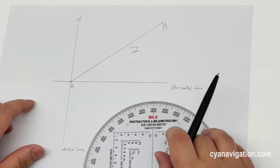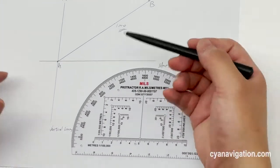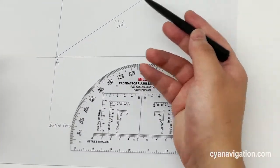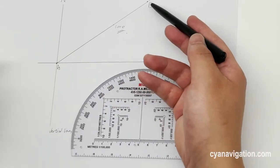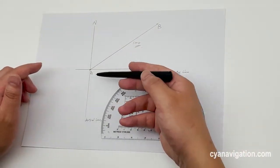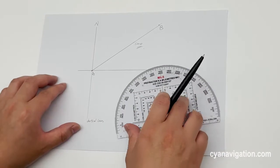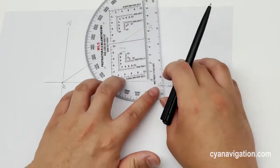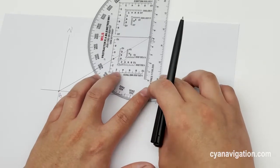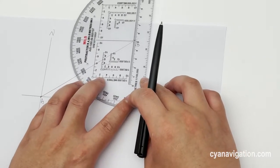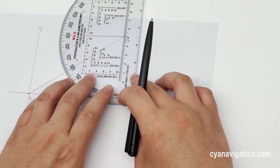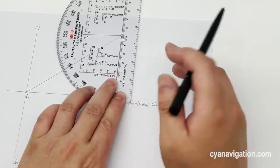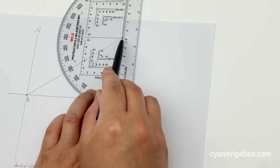Now if we need to check its back bearing from point B to point A, what we need to do is just move the protractor to the left and read here.